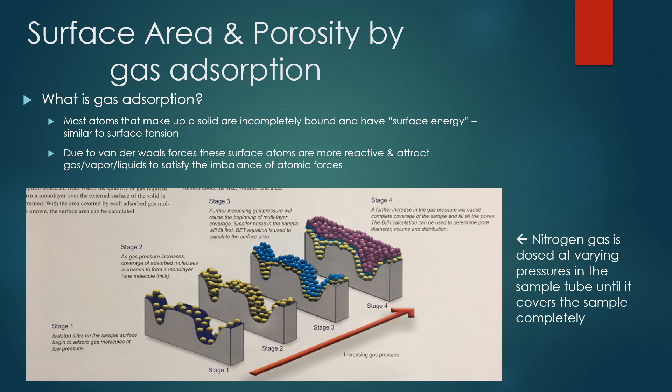The instrument doses nitrogen gas at varying pressures into the sample tube, and the surface of the material attracts that nitrogen gas and eventually covers the surface in a monolayer. That's what you're seeing at stage 2 in that picture - that's where we get surface area measurements. As you continue past the monolayer, the molecules fill in the pores on the surface or cavities within the material, and that's where you get porosity measurements.